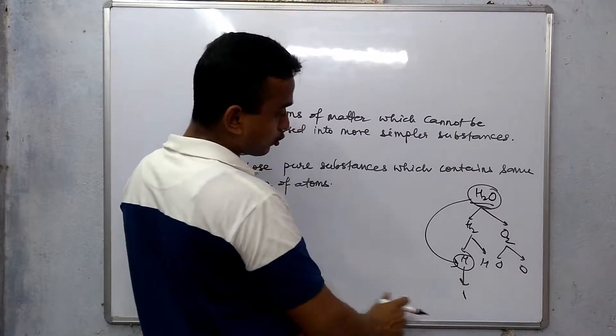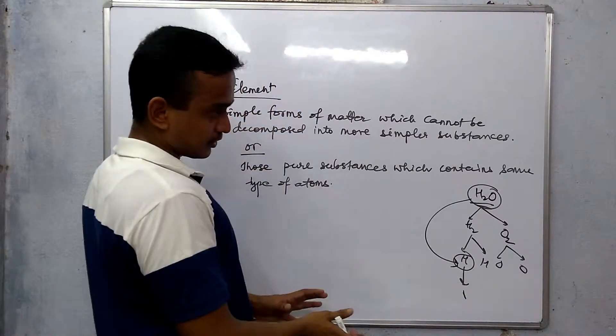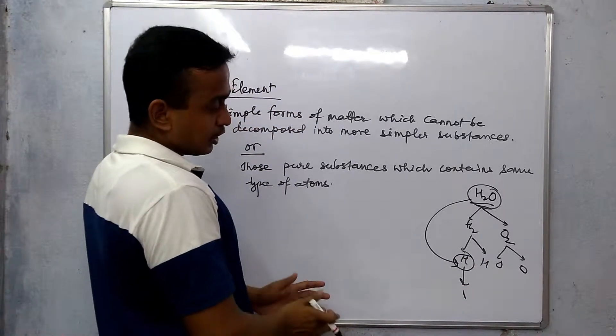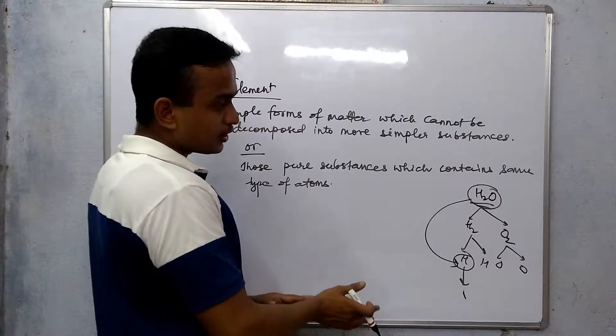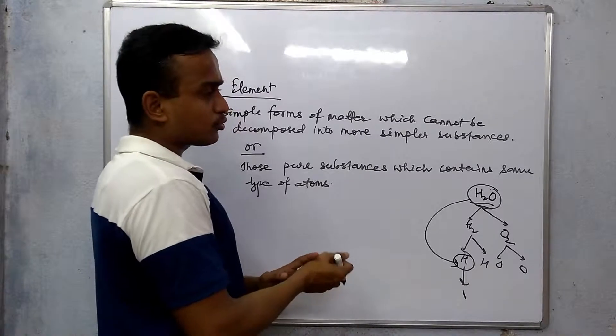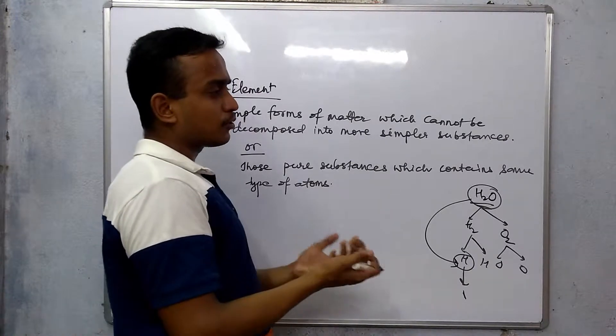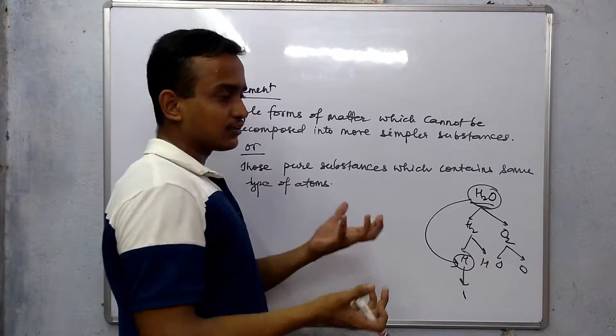Hydrogen is a simple form and it is not possible to make anything else from it. If you try to break it further, then you get electron, proton, and neutron — but those will not behave like any substance.